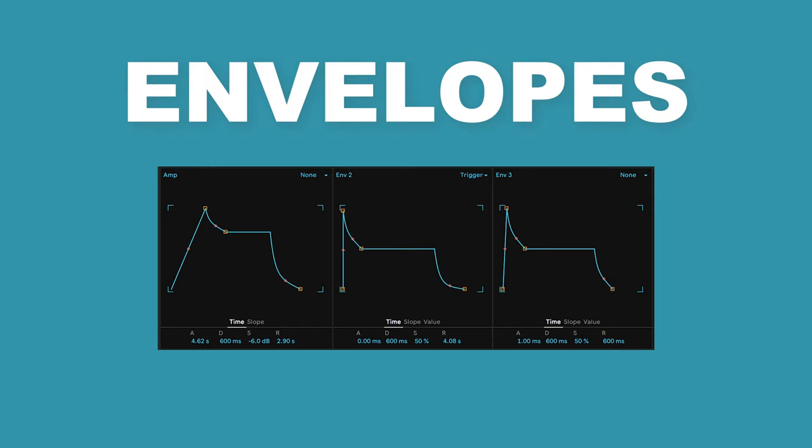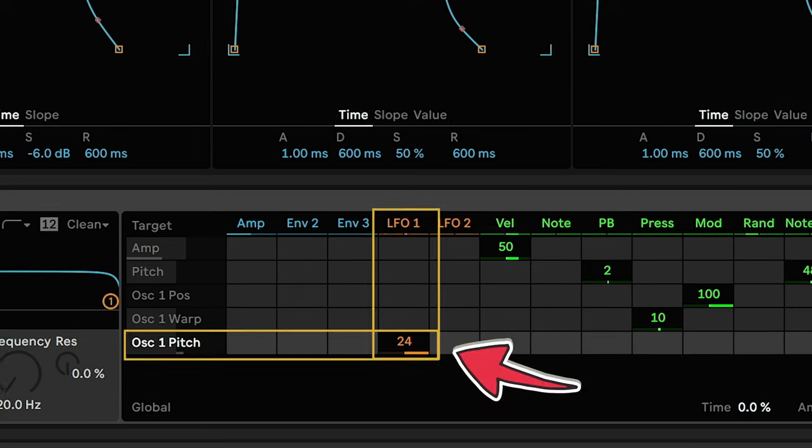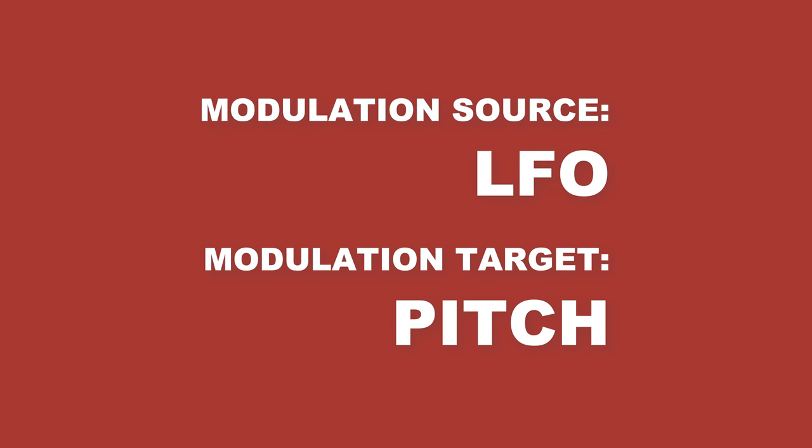A modulator is simply an element in a synthesizer that changes some other element over time. LFOs, envelopes — these are also sometimes called sources. For example, an LFO can be applied to the pitch of an oscillator. The LFO is the modulation source and the pitch is the modulation target.